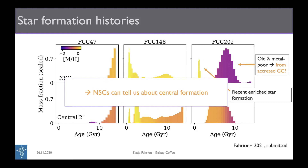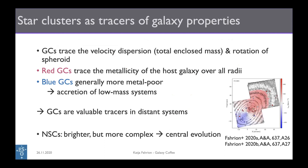Here it really becomes more complicated — it's no longer exactly what is happening in the galaxy center. But if we are able to disentangle in-situ star formation and accretion of metal-poor globular clusters, we can exploit this complexity in nuclear star clusters and learn a lot about the central formation of galaxies over cosmic time.